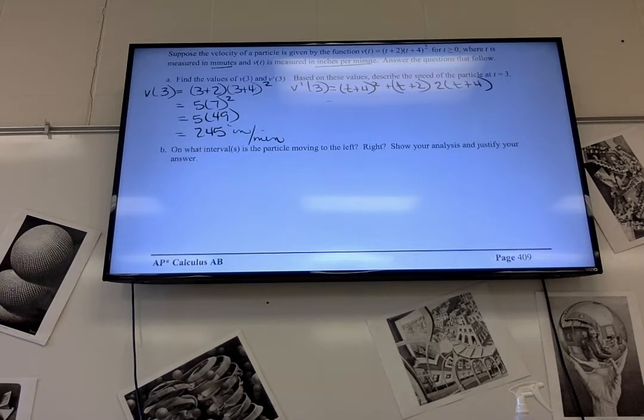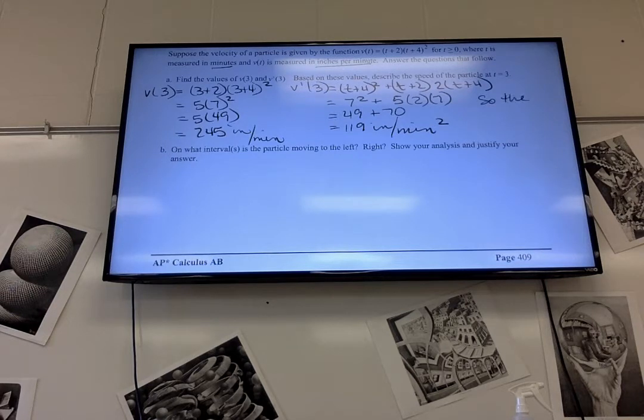So, plug in 3. So, 7 squared plus 5. Okay, I was like, is it 5? 6 squared times 2 times 2 times 7. Okay. So, 49 plus 70 times 19. And what would the units be for each? Minutes for minus 4. So, now we're going to describe the speed. So, is the speed of the particle increasing or decreasing? Think about Ashley.